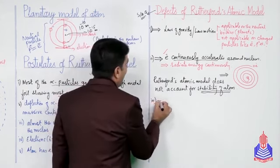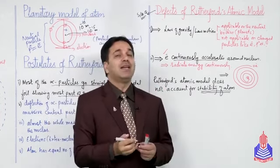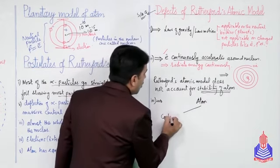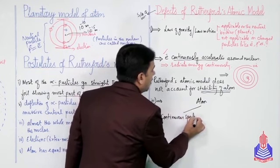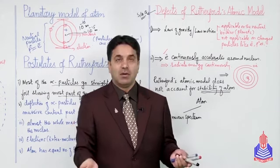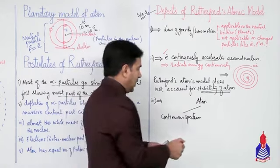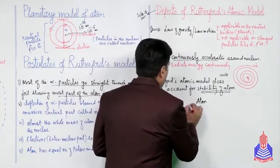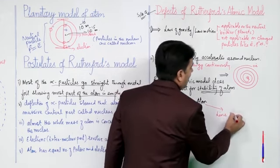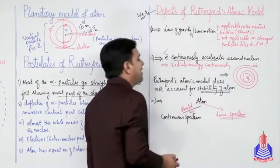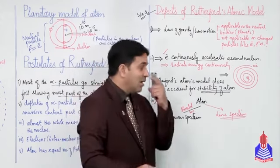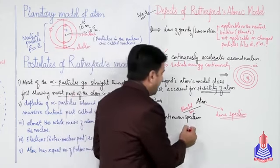تیسرا defect: اگر electron continuously energy radiate کرے تو atom کا spectrum continuous spectrum ہونا چاہیے۔ لیکن حقیقت میں atomic spectrum is line spectrum، continuous نہیں۔ تو spectrum of atom بھی اس بات کو confirm نہیں کرتا کہ electron nucleus کے گرد revolve کرتے ہوئے continuously energy radiate کرتا ہے۔ یہ defects ہیں Rutherford atomic model میں اور ان کی وجہ سے یہ model زیادہ acceptance حاصل نہ کر سکا۔